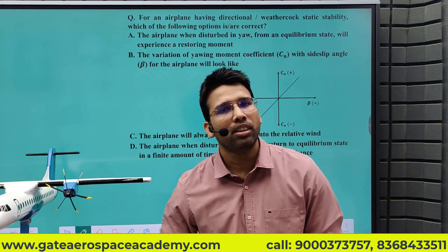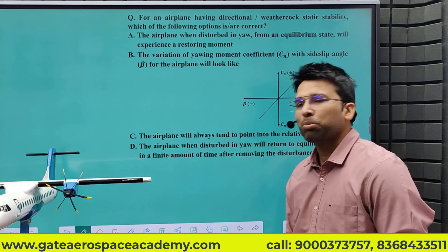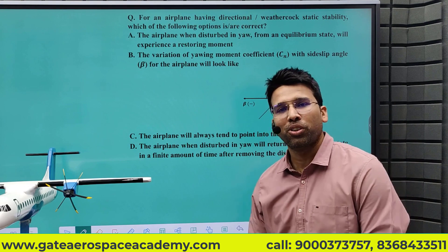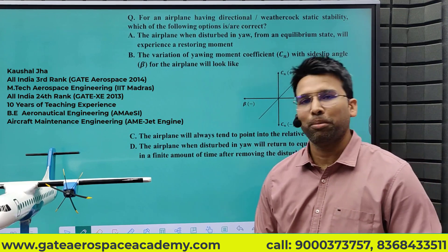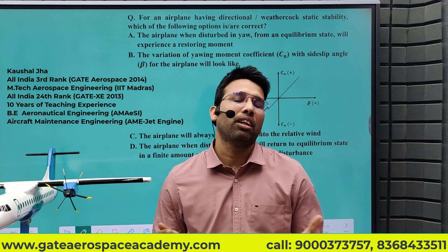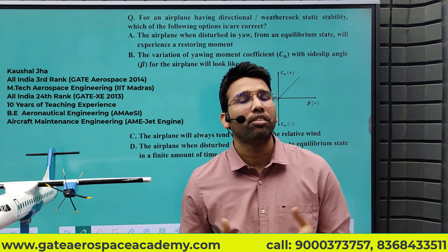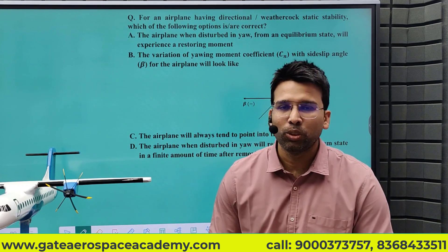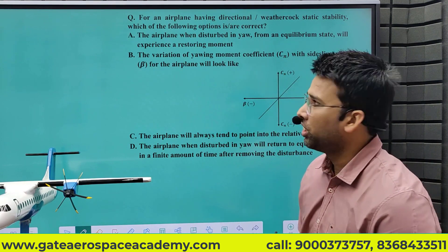I am getting lots of queries from students related to the stability question of GATE Aerospace 2024. Most students are asking that when an aircraft is statically stable, why is option D not true — that the aircraft will return to the equilibrium state in a finite amount of time after removing the disturbance. For that, you have to go back to the definition of stability, which I have already explained thoroughly in the lecture.